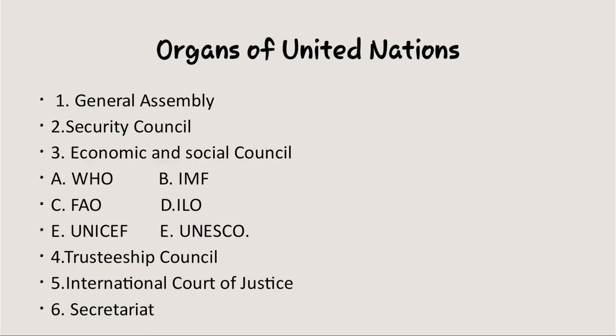The United Nations is a very big organization which includes six organs. The main organs of the United Nations are: the General Assembly, Security Council, Economic and Social Council, Trusteeship Council, International Court of Justice, and the Secretariat. The International Court of Justice is situated in Hague, in the Netherlands. All other councils are situated in New York, America. Now we will discuss the activities of each organ.